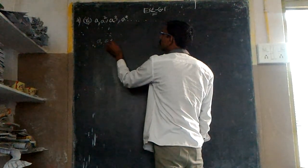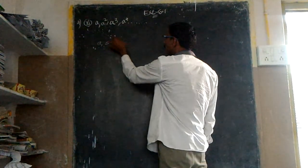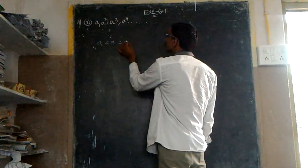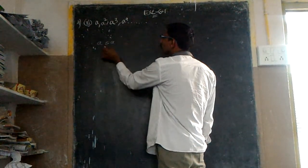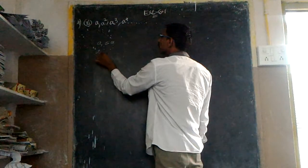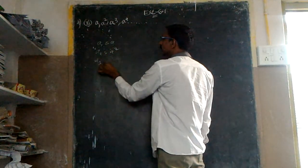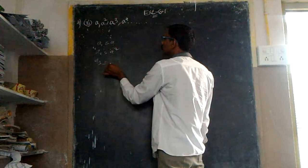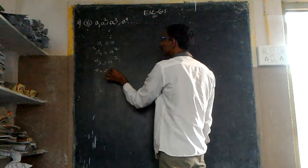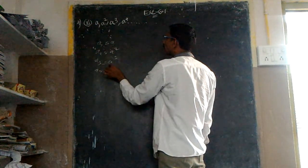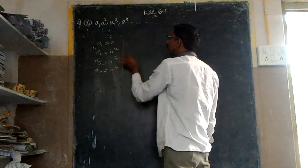A1 is equal to A, and A2 is equal to A square, A3 is equal to A cube, A4 is equal to A to the power of 4. Is it or not? Yes, sir. Now,